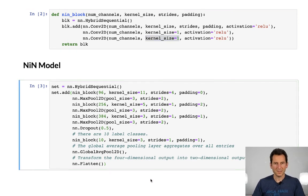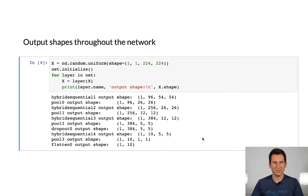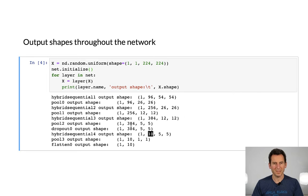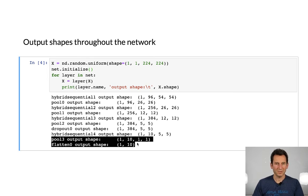Let's see what this looks like in practice. Applying the network to 224-by-224 images, we get output sizes of 54-by-54, then 26-by-26, then 12-by-12 — corresponding to the pooling and hybrid sequential blocks. Then the NIN block applies dropout and produces a 5-by-5 output with 10-dimensional channels, setting things up for the number of classes needed. Then there's one more global pooling step and we're done.